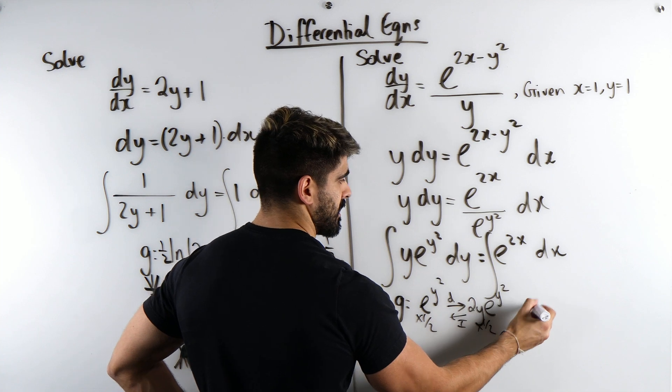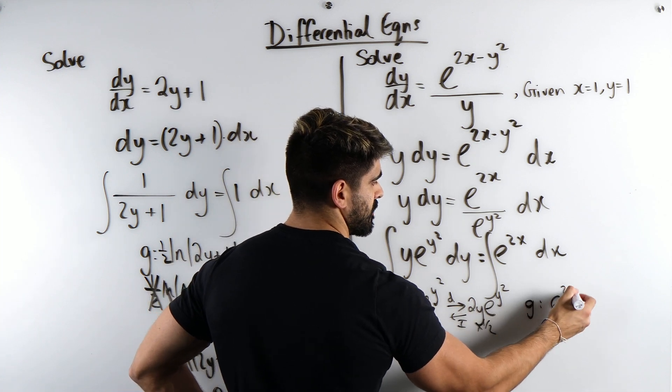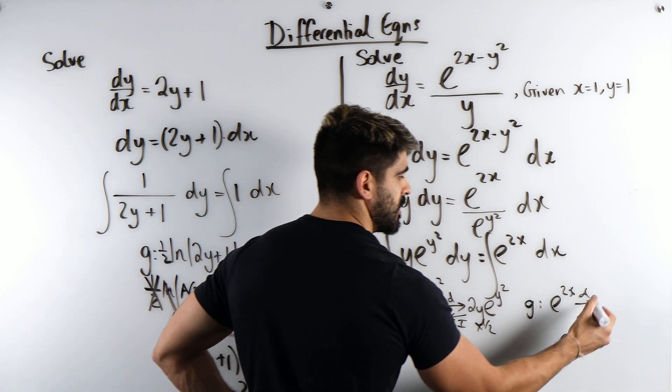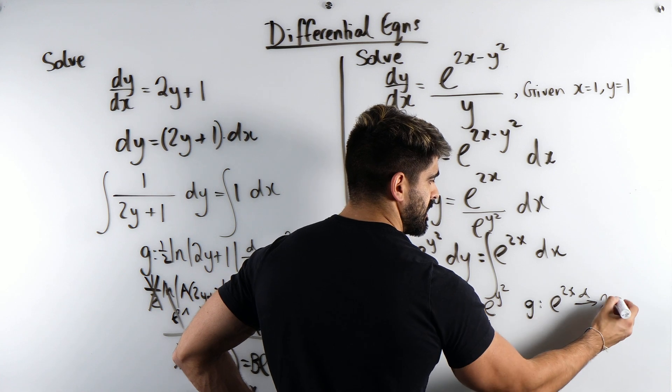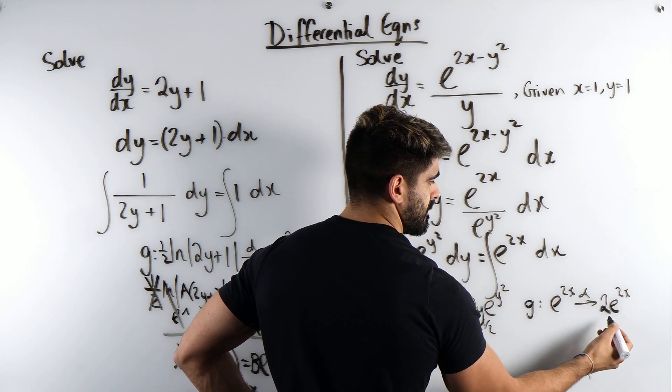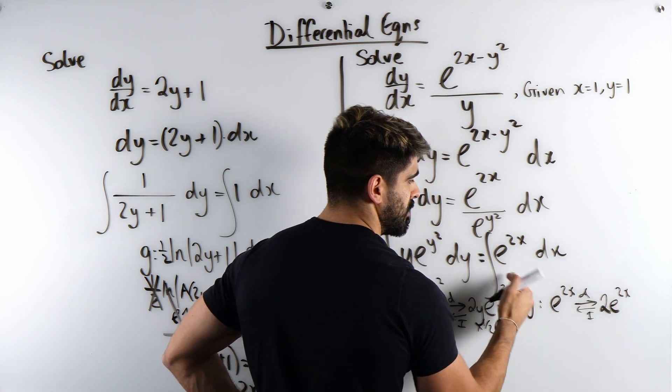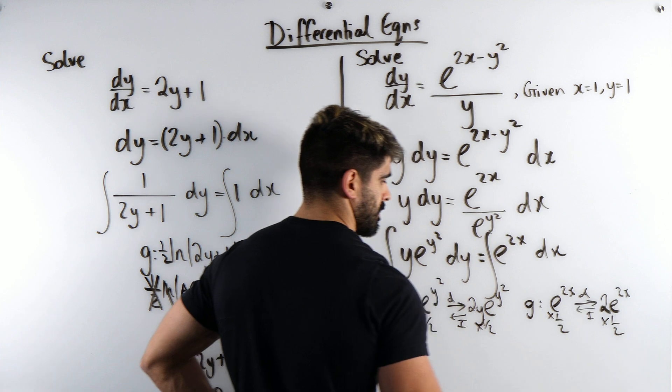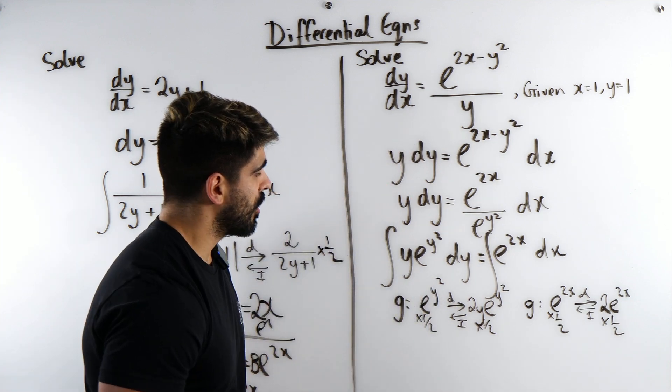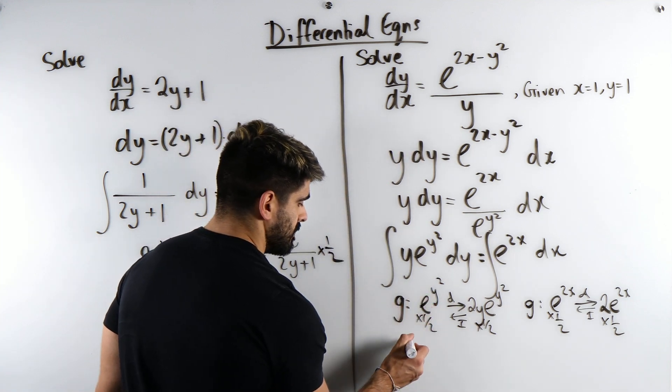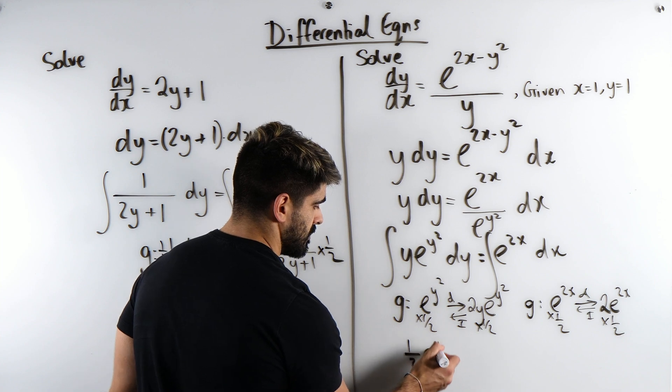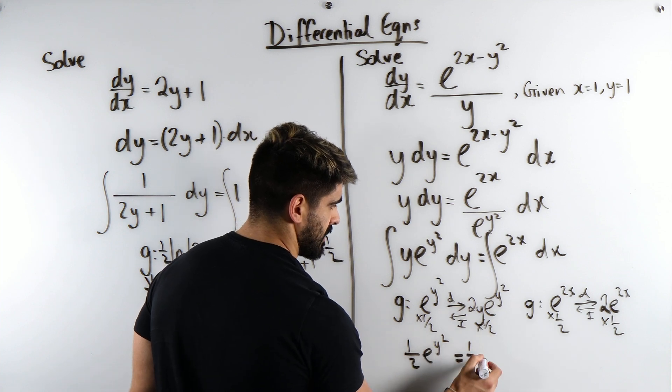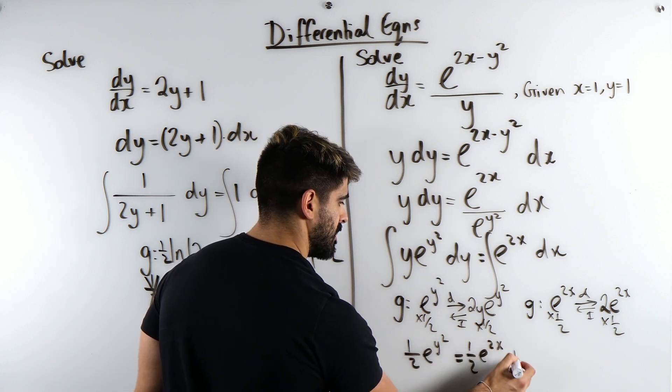Similar with this one, we're going to make our guess. My guess is that somebody differentiated e. Because in general, e differentiates to e. But when you differentiate this, you get two. E differentiates to e. Power stays the same. So that integrates back to this. But we didn't want the two. So we're going to half both sides. Alright? So my answer is a half e to the y squared equals a half e to the 2x plus c.